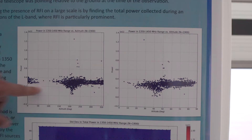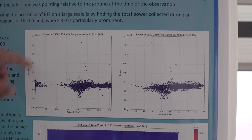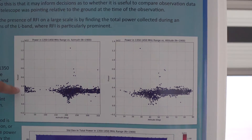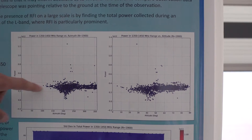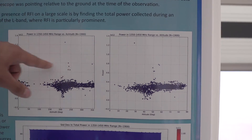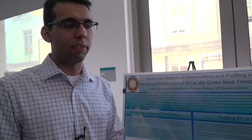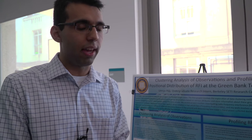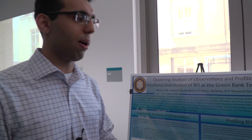If you find regions of the sky where there are large differences in the amount of power collected in a certain range, that might indicate there's a lot of RFI in those regions, and you might want to avoid them when you're planning your observations.